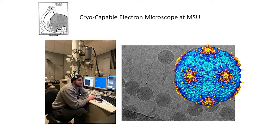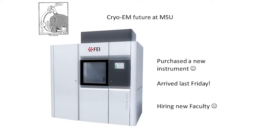Here's an example of the microscope we started with on campus. When I joined, we upgraded this instrument to allow us to become cryo capable. Since then we've outgrown that a little bit. This is the new instrument that arrived on Friday and will be installed and ready to go probably sometime around February. We're also planning on hiring new faculty and building this as a core facility that hopefully many researchers at MSU can use.